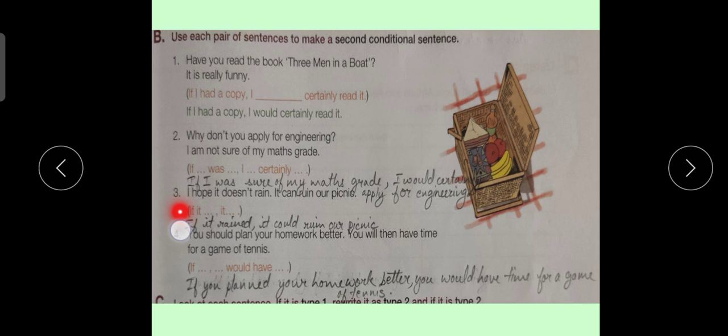Sentence number 3. I hope it doesn't rain. It can ruin our picnic. Option. If it, it dash. Sentence will be If it rained, it could ruin our picnic.